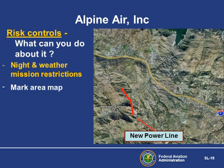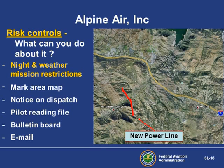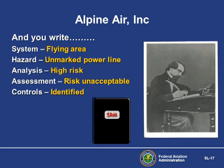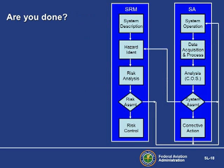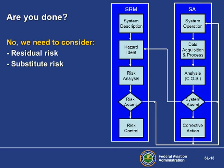You can mark the location of the new power line on the big area map on the wall of your lobby to remind everyone. How about putting reminders everywhere you can think of? Time to bring your documentation up to date. This is a summarized version of what you might have written so far. With your authoring duties complete, are you finished with the safety risk management process? Not yet. You need to consider residual and substitute risk – is there any risk left over after you apply your controls, or have you introduced a new hazard while applying them? Is the cure worse than the disease?